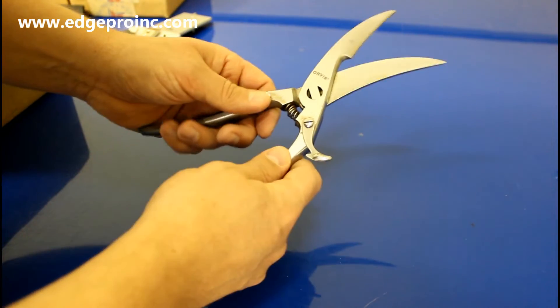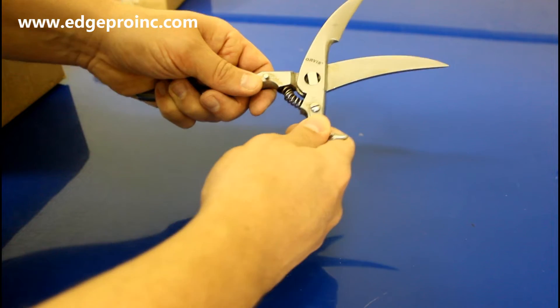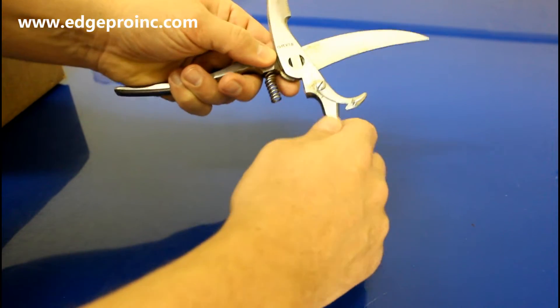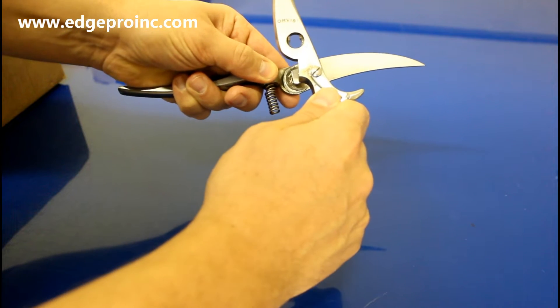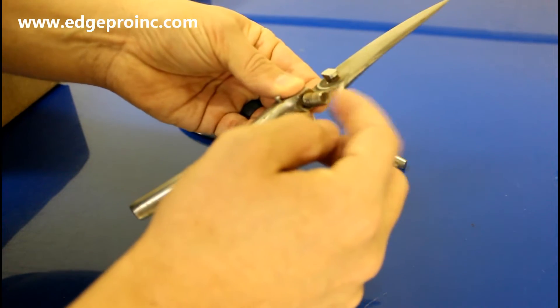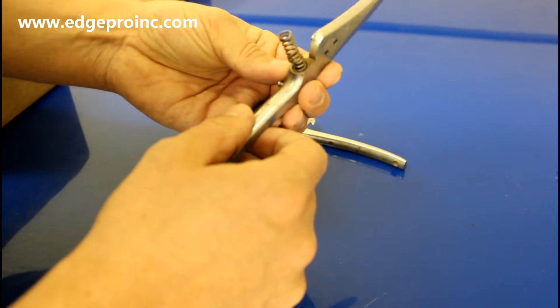So I am going to need to take these apart. To do that I'm just going to open them up all the way. That's going to pop this spring loose and then it just separates just like that. It looks like this spring is going to stay attached to the scissor.